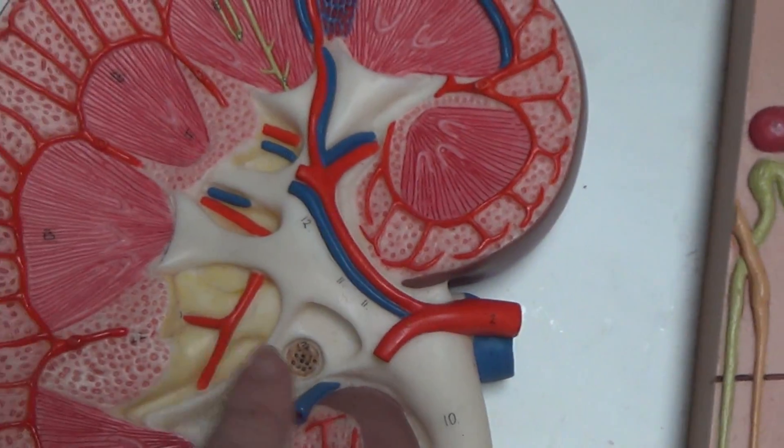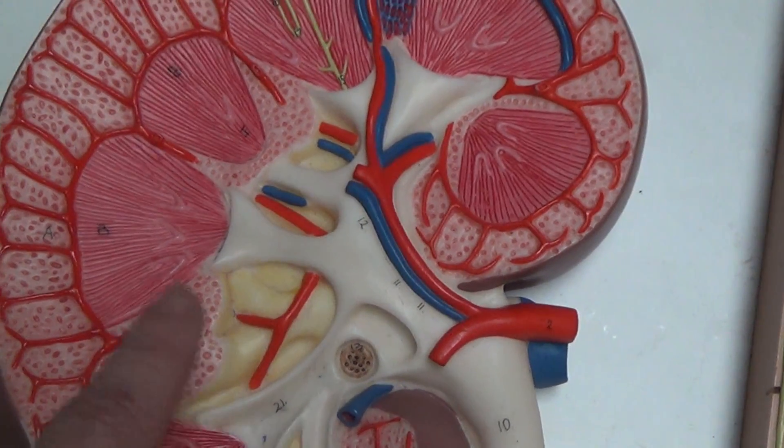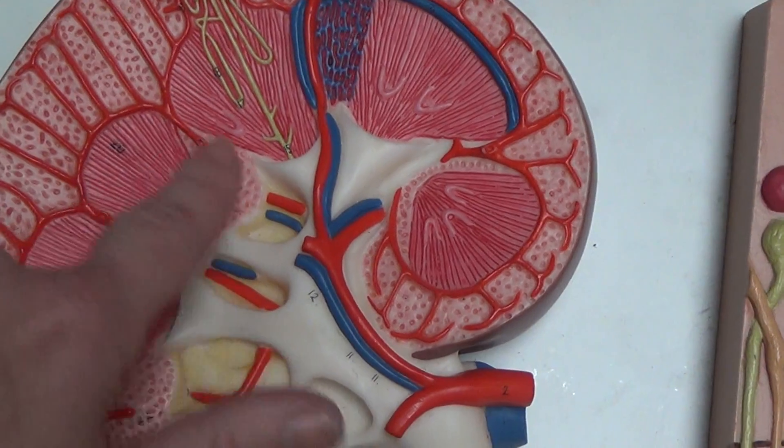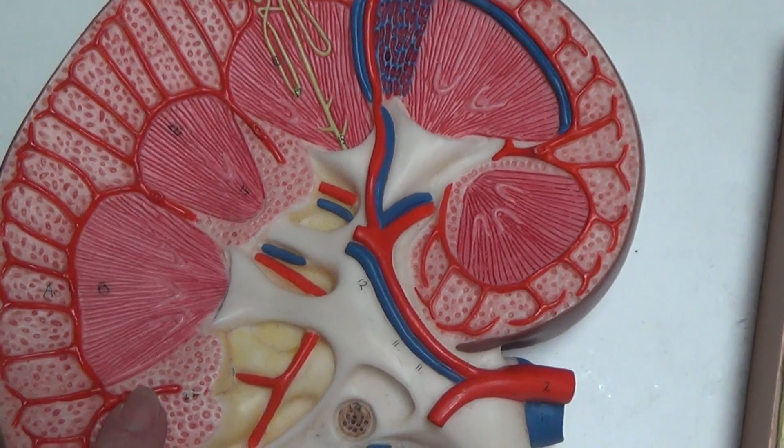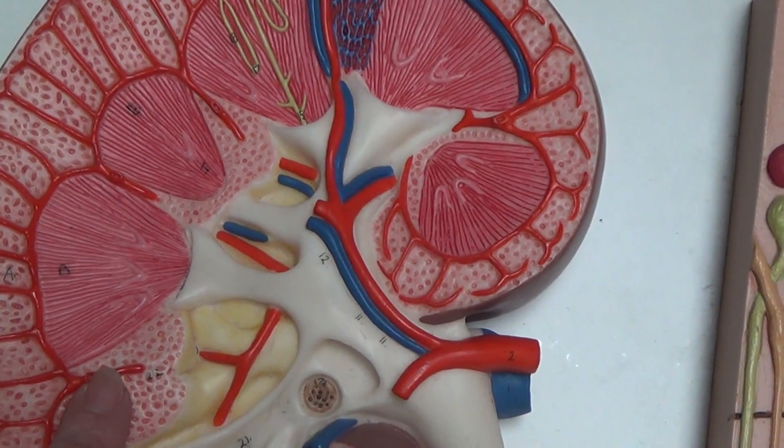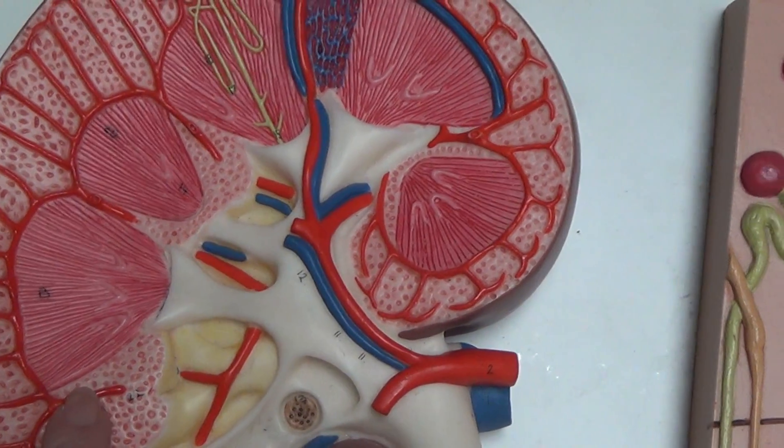So the renal artery will start splitting once it gets into a kidney. And you will have blood vessels that run up the sides of the pyramids. These are the interlobar, so between the lobes, arteries and veins.